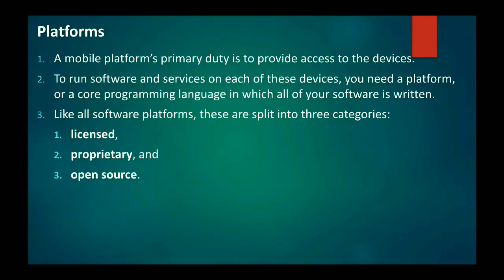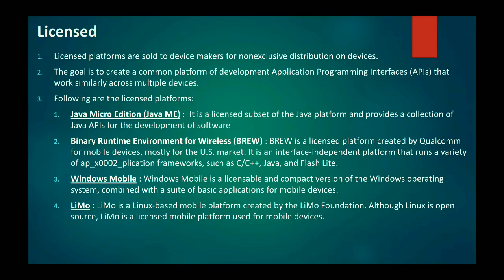Now, coming to the platform layer. The primary duty of a platform is to provide access to the devices and to run software and services. Platforms are split into three categories: licensed, proprietary, and open source. Licensed platforms are sold to device makers for non-exclusive distribution. Examples include J2ME (Java Micro Edition), BREW (Binary Runtime Environment for Wireless), Windows Mobile, and LiMo — a Linux-based mobile platform from the LiMo Foundation.